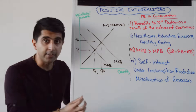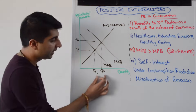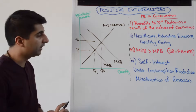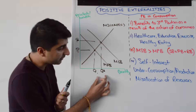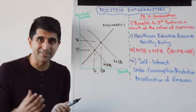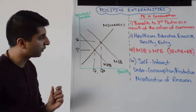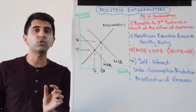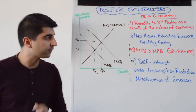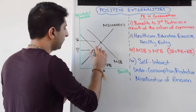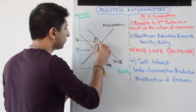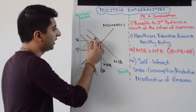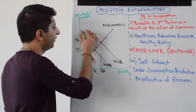And you can clearly see here that there is a misallocation of resources. In this case there is an under-consumption and under-production. And if there is a misallocation of resources — allocative inefficiency — we know there is going to be a welfare loss. The welfare loss, remember the trick, is always the triangle that points towards the social optimum. So in this case it's going to be this triangle here. That's the welfare loss.